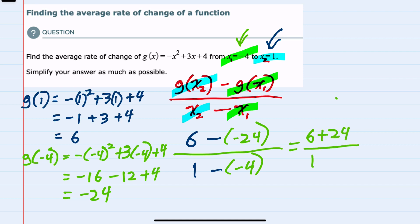and the denominator to 1 plus 4. So 30 in the numerator and 5 in the denominator, our average rate of change between these two points is 6.